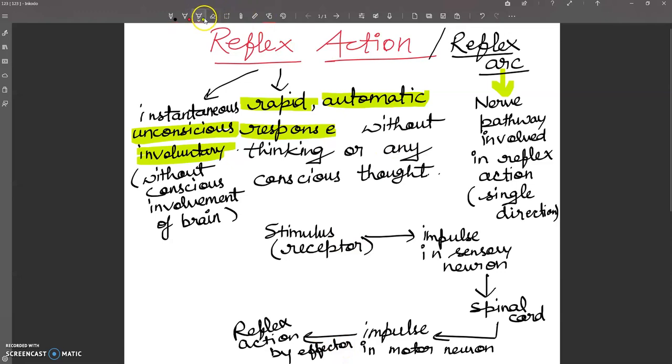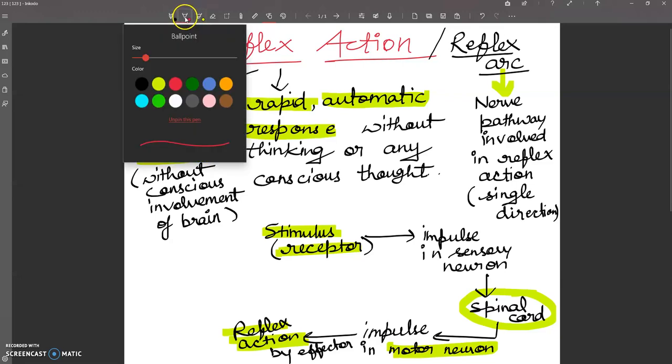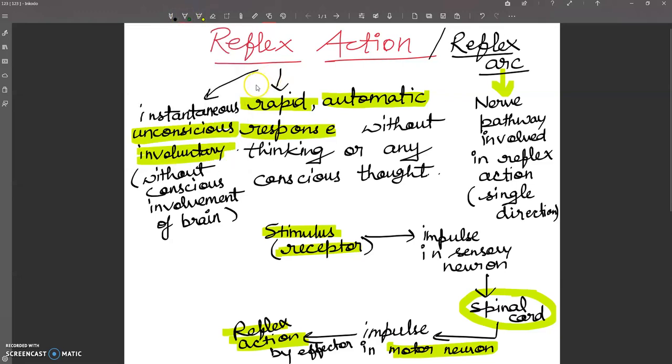So this is the entire pathway. This is the reflex arc. This is the simplest type of reflex action for students, and they involve sensory neurons, spinal cord, and motor neurons.